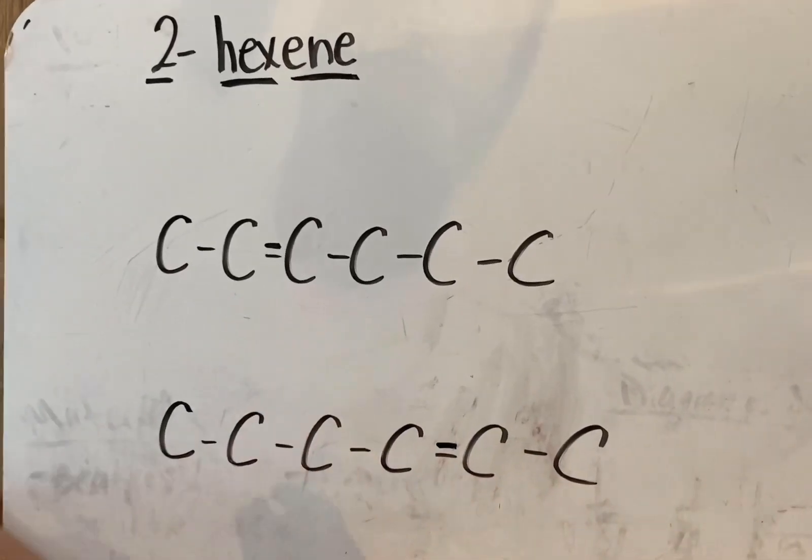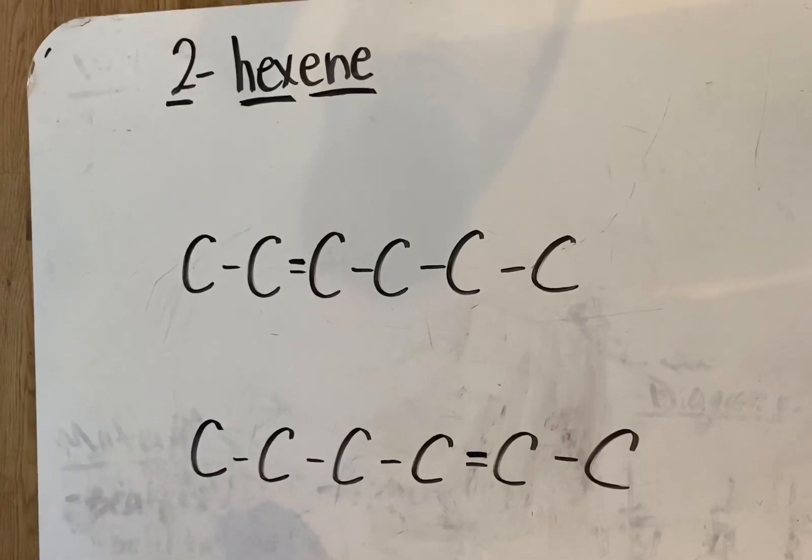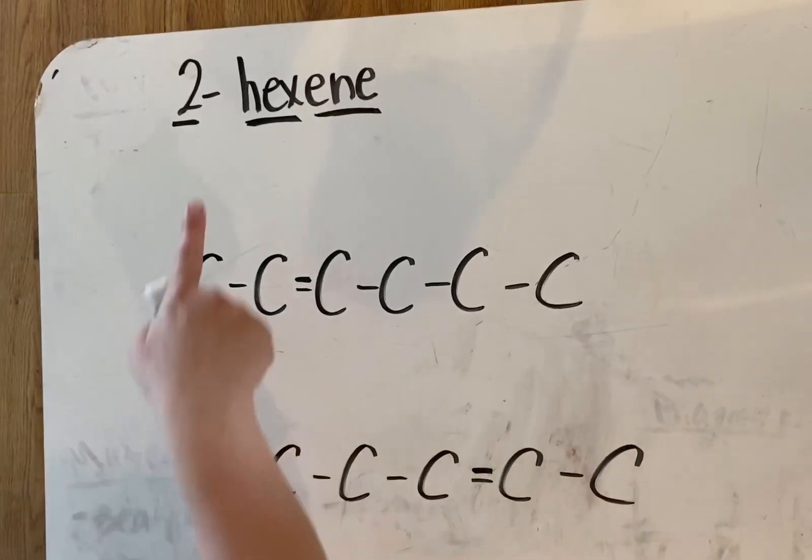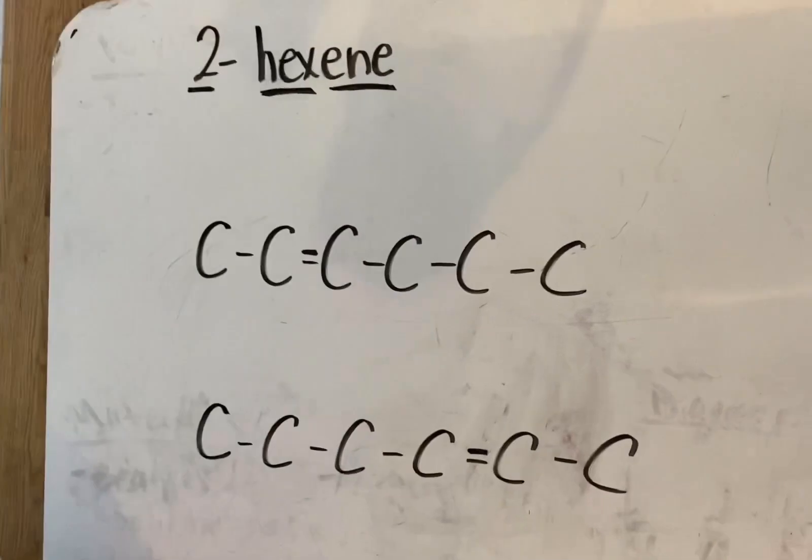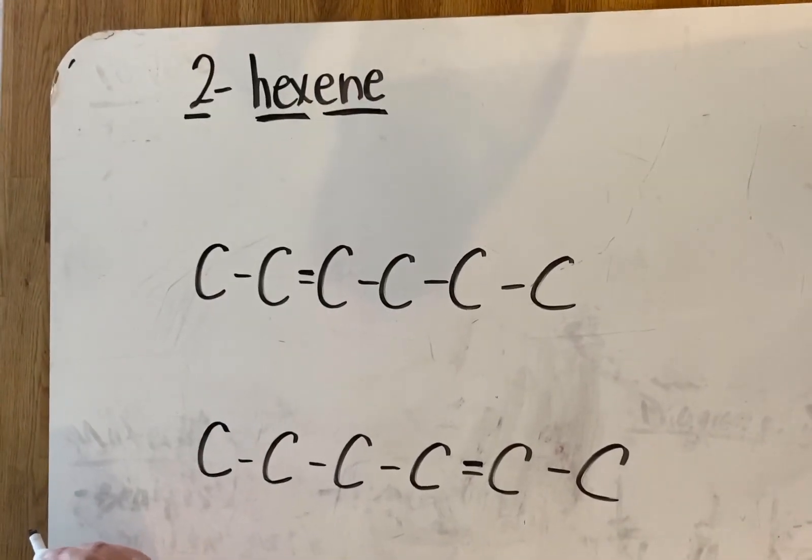Right now I have to draw the H's in, but these are the exact same pictures. If I do draw the H's in, you could figure out how many H's are needed for hexene by doing that CnH2n.